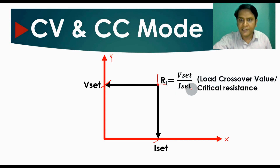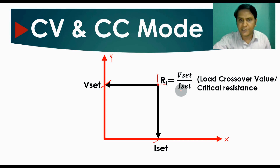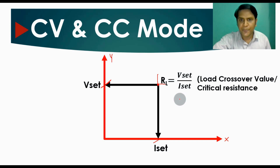The value of the load resistance at this crossover point is called the critical resistance. You can determine this value using the formula: R_L = V-set divided by I-set. This is called the critical load or critical resistance. V-set is the maximum voltage limit and I-set is the maximum current limit.